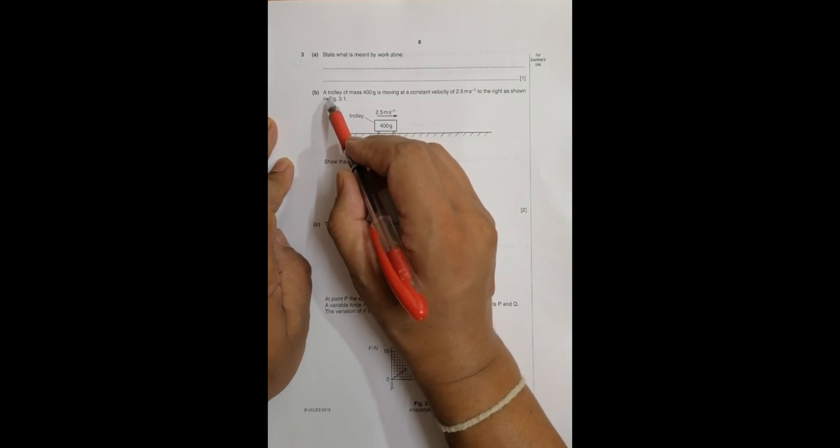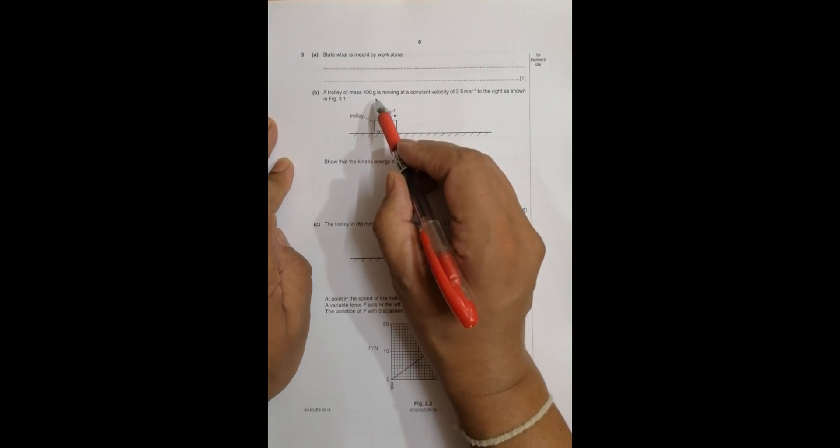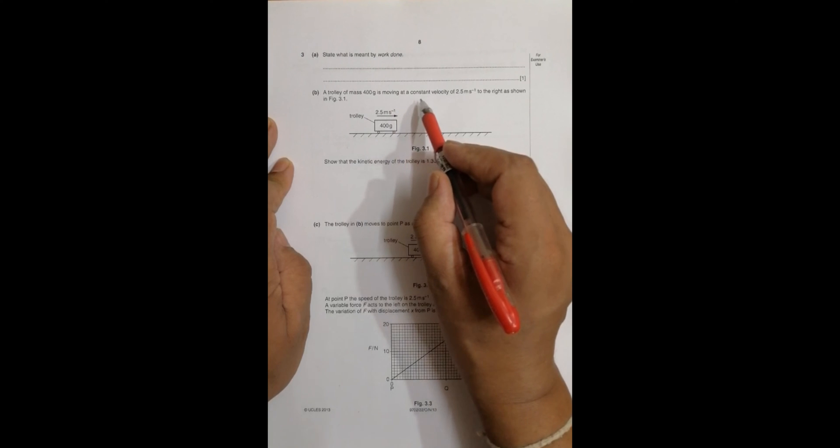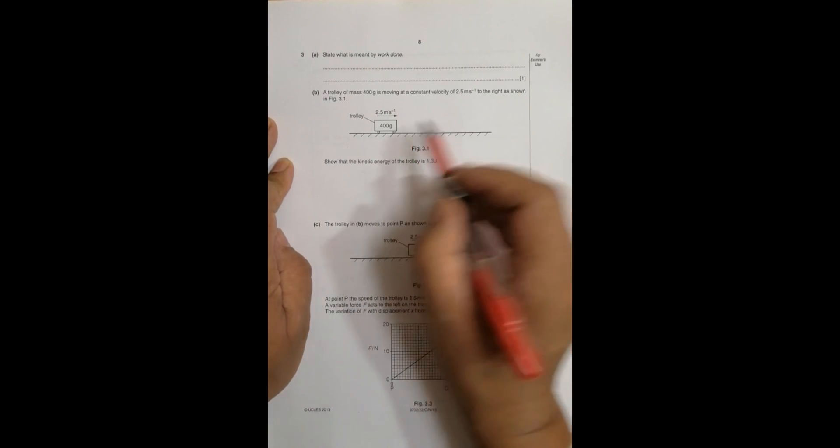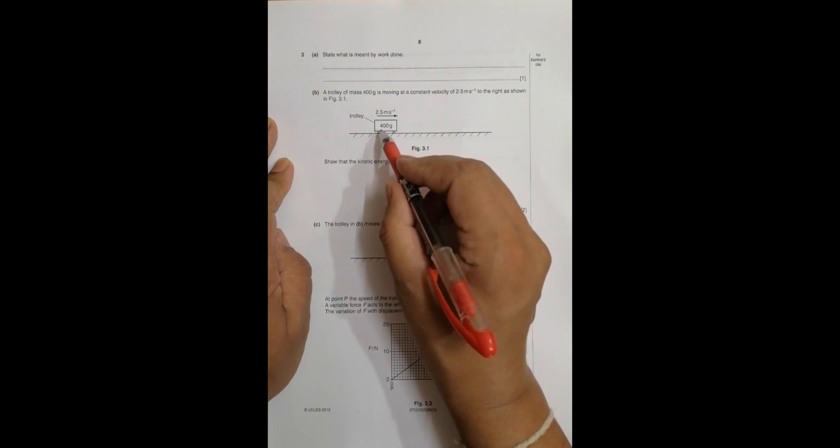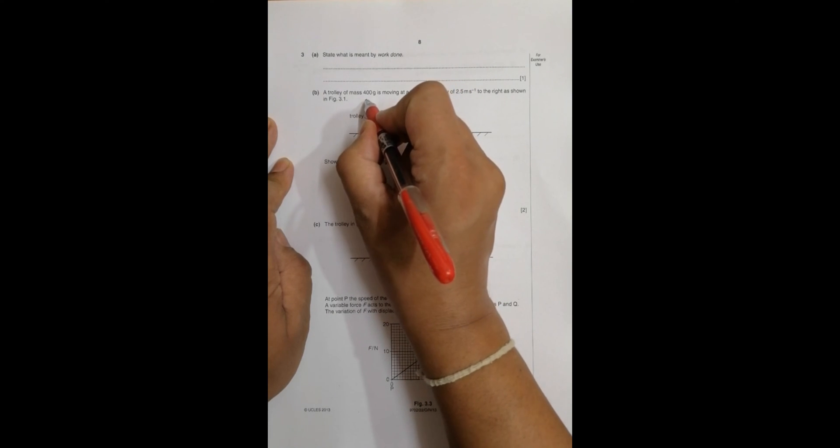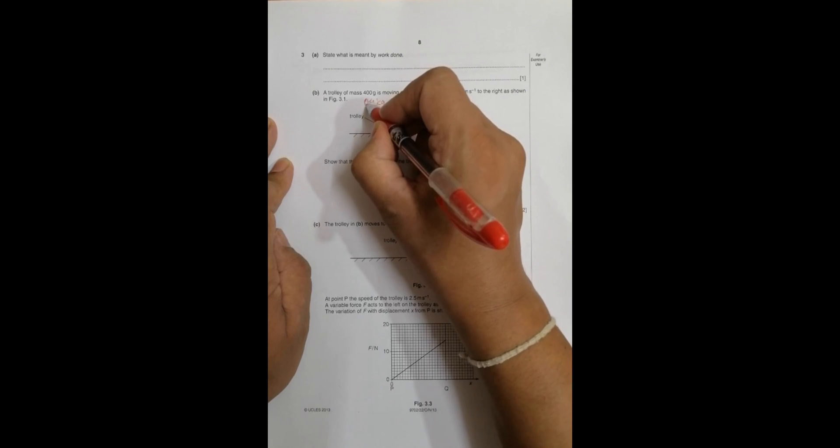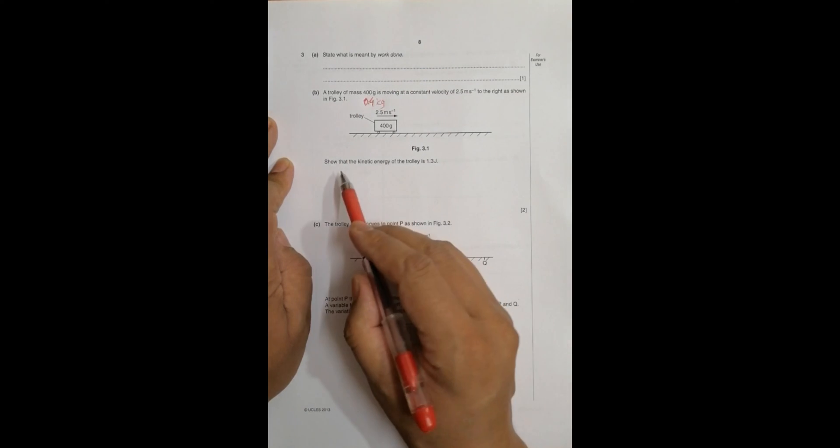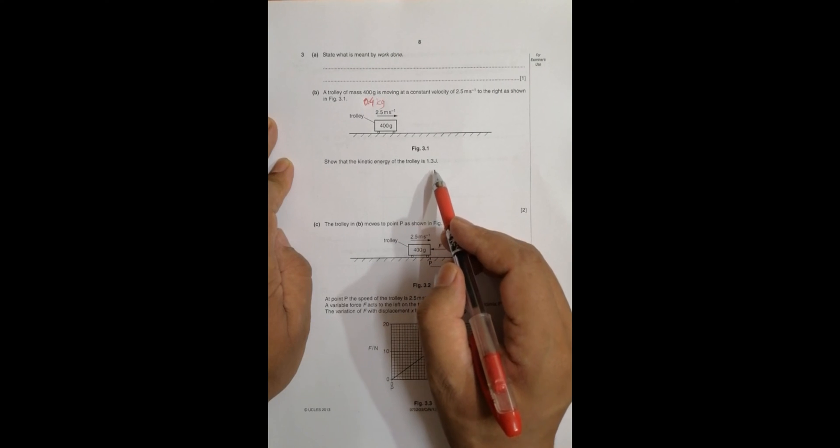A trolley of mass 400 grams is moving at a constant velocity of 2.5 meters per second to the right as shown. The mass is 400 grams, so it is 0.4 kg. Show that the kinetic energy of the trolley is 1.3 joules.